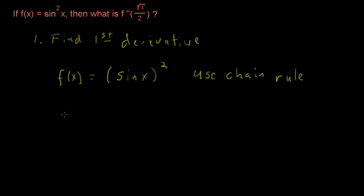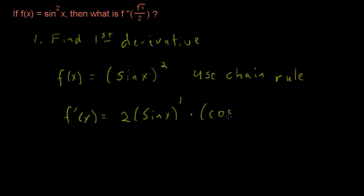We see an inside function and an outside function. The derivative is: take the 2 and multiply it times the inside function — 2 times sine of x — decrement the exponent from 2 to 1, then multiply by the inside function's derivative, which is cosine of x. So the first derivative is 2 sine x times cosine x.